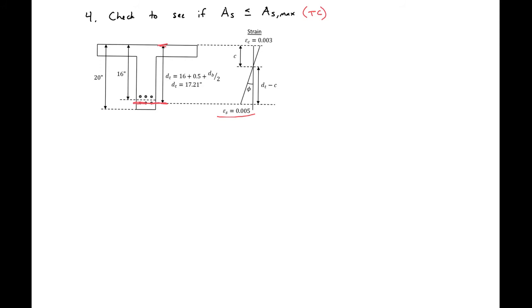I did that here. It's just the D, which is the distance to the center of our two layers of steel, plus a half inch, which is half of the spacing between the two layers of bars, and then plus db over 2, which is the radius of the bottom layer of bars. We can use these values to then find our neutral axis when we're tension controlled. We're looking for our C here. We'll do this by setting up our similar triangles. So we'll have 0.003 over C is equal to 0.005 over D sub T, which is 17.21 inches minus C.